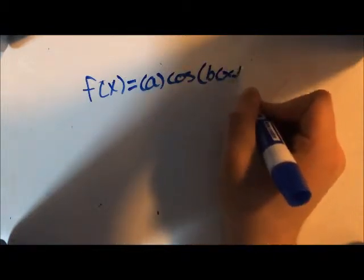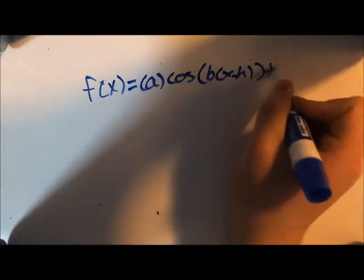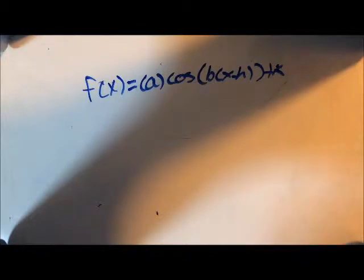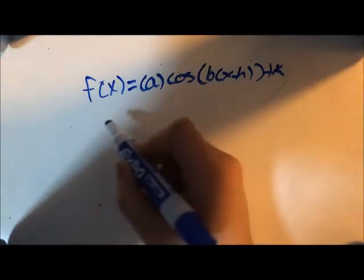The equation of axis, or k value, of this function is 100. This means the graph is shifted vertically by 100 units.